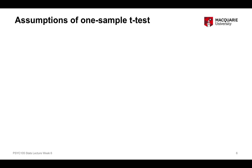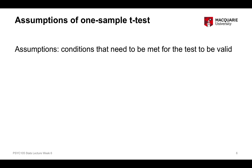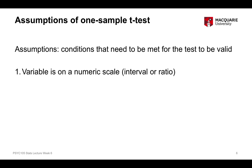Next, we need to talk about assumptions — certain conditions that must be met for the test to be valid. Every statistical test has assumptions that tell us whether the test is appropriate in a given instance. For the one-sample t-test, there are three assumptions. The first is that the variable of interest must be on a numeric scale — a quantitative variable, either interval or ratio, but not ordinal or nominal.